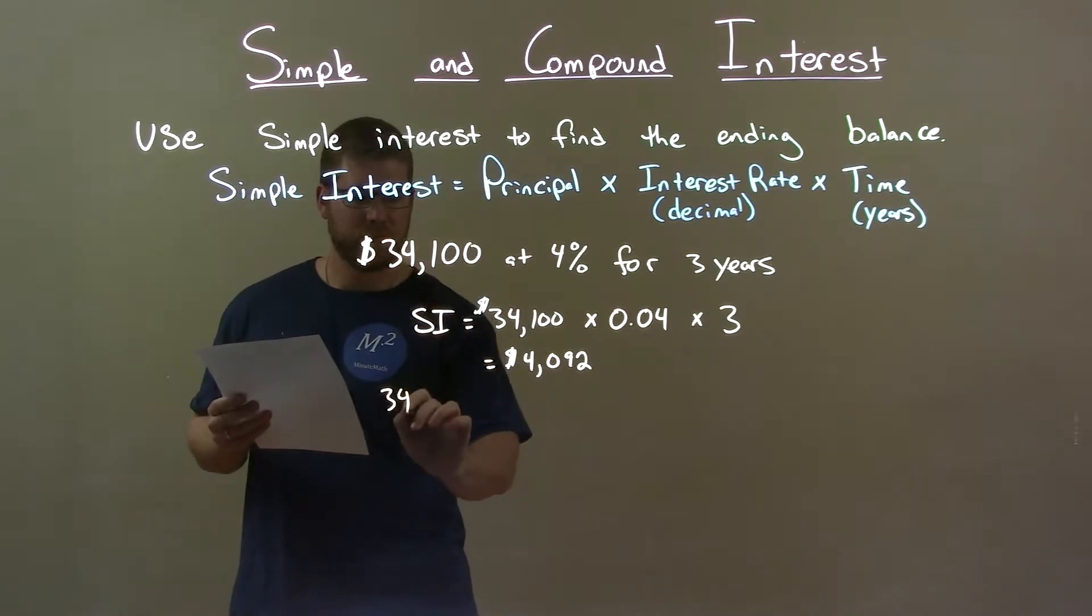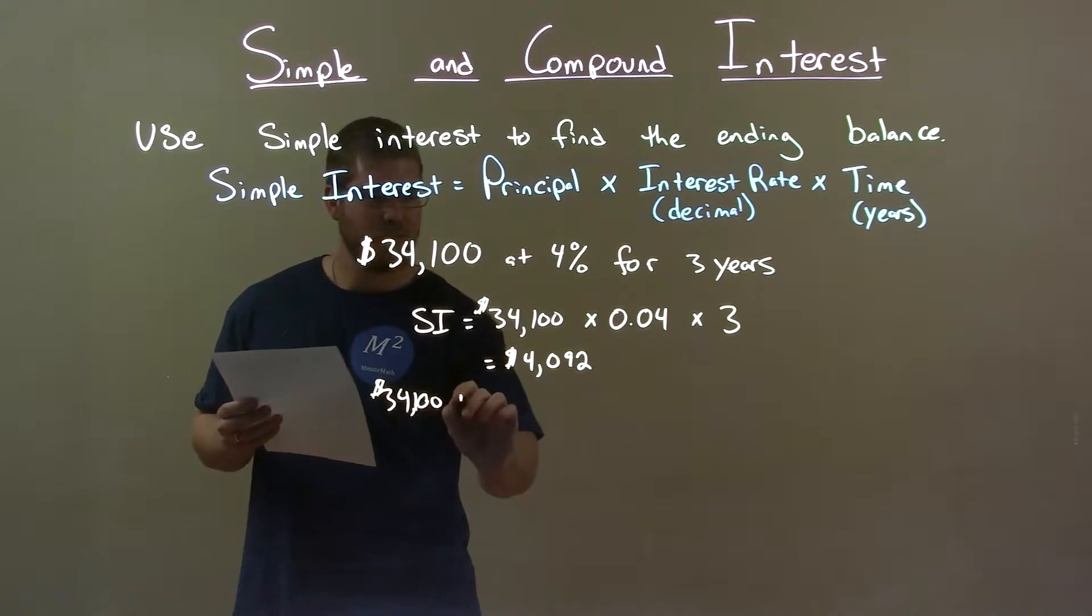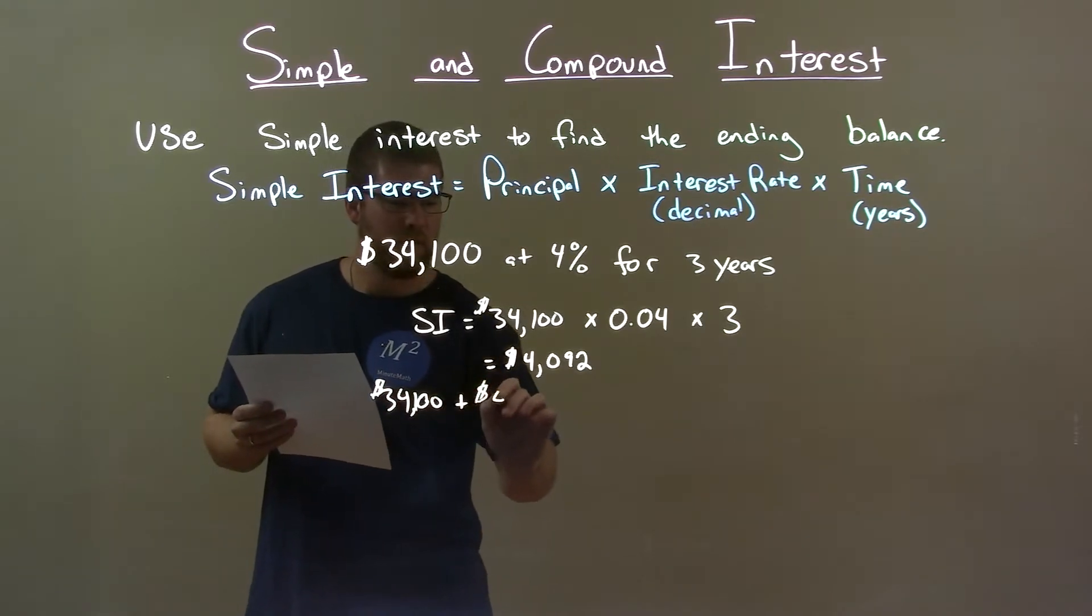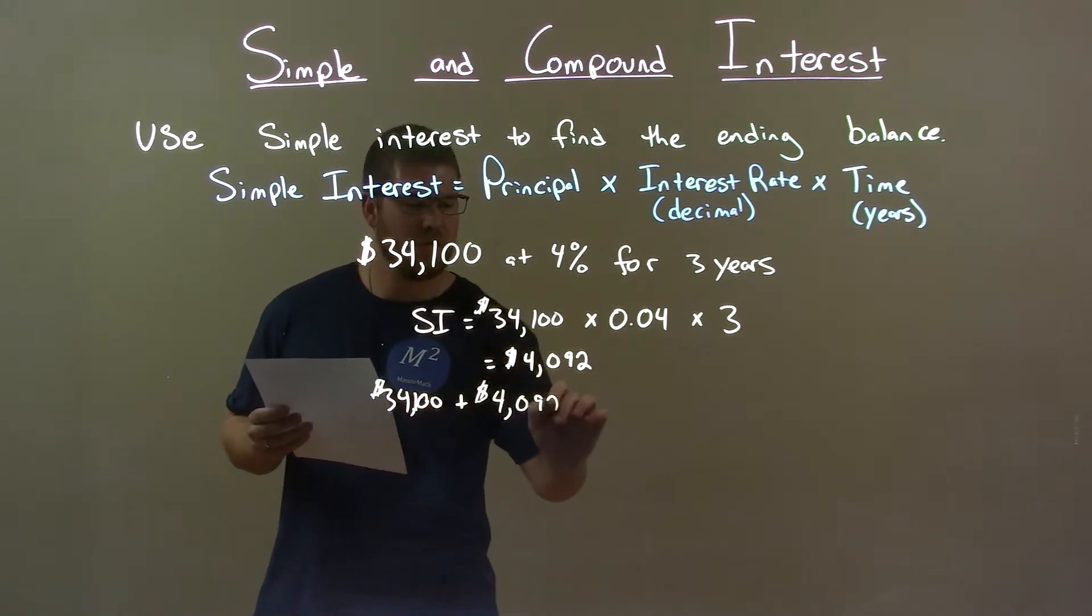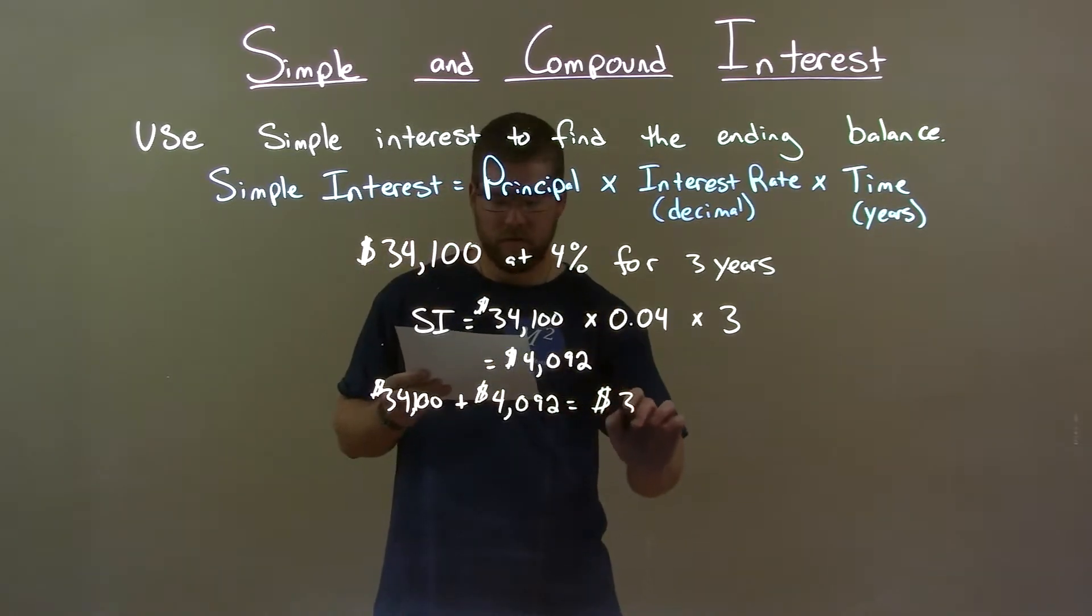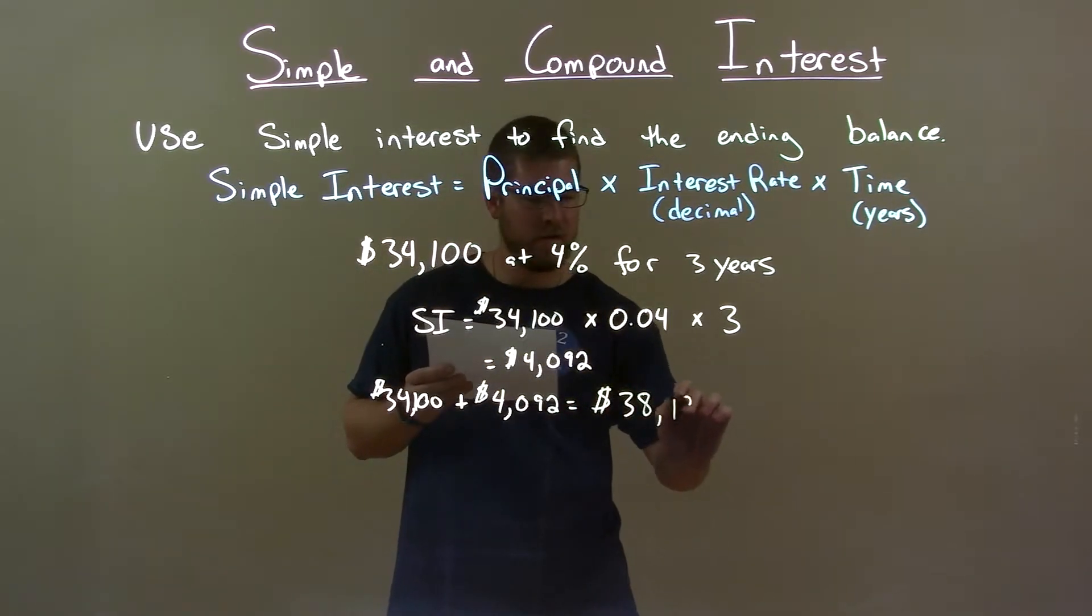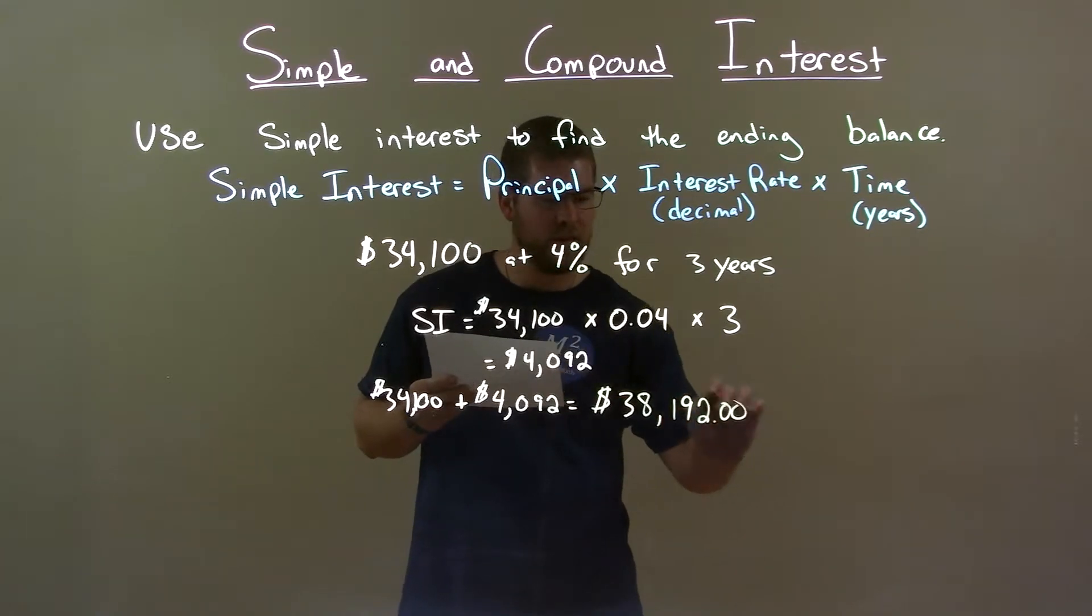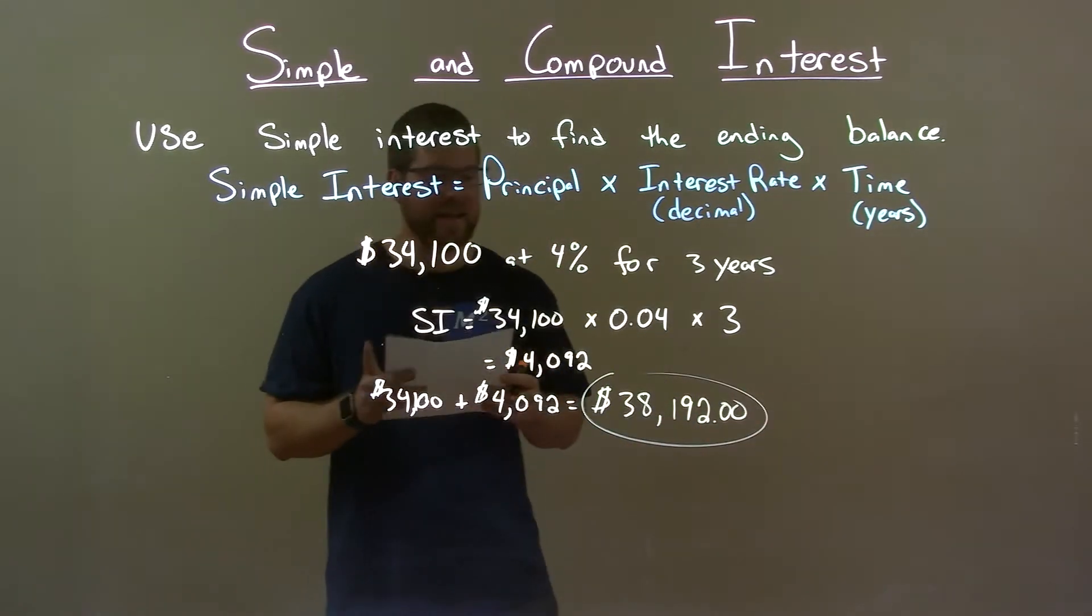So $34,100 plus $4,092 gives us our final answer here of $38,192.00. And that's our final ending balance.